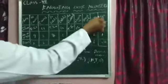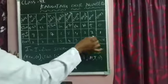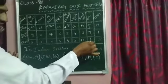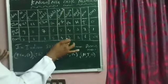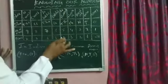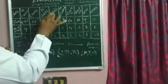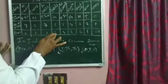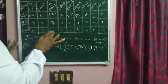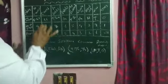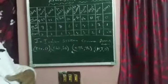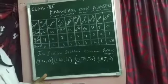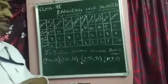Now observe how many zeros are at each place. Ones place has no zero. Tens place has one zero, hundreds place has two zeros, thousands place has three zeros, ten thousands place has four zeros, lakhs place has five zeros, ten lakhs place has six zeros, crores place has seven zeros, and ten crores place has eight zeros. This is the Indian system, and we will learn related sums in exercise 3.